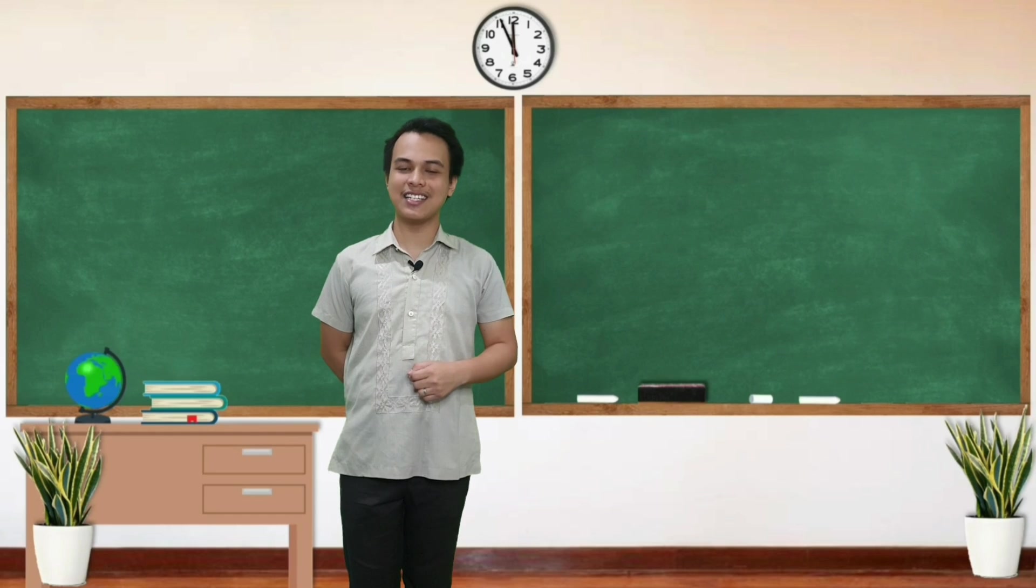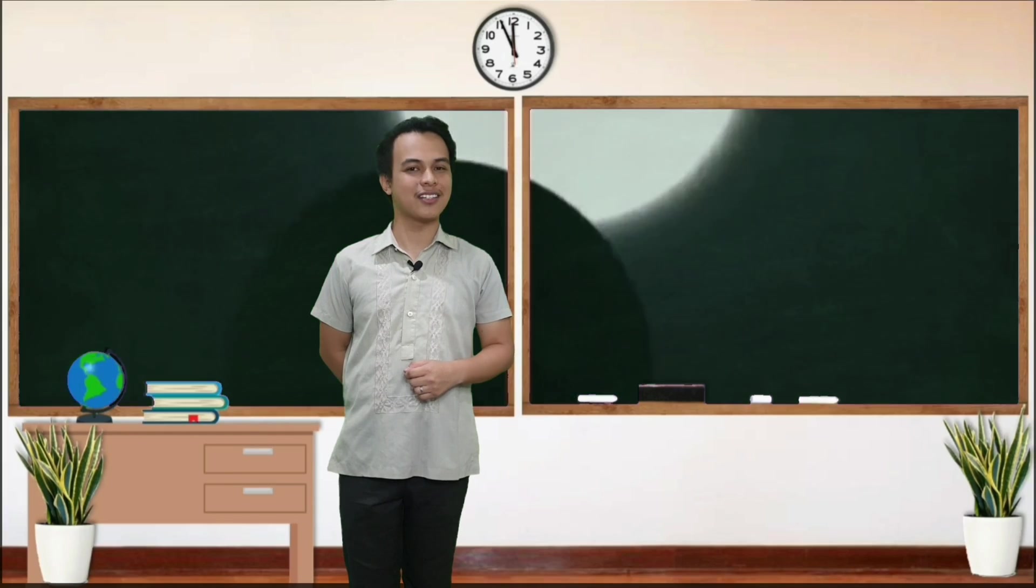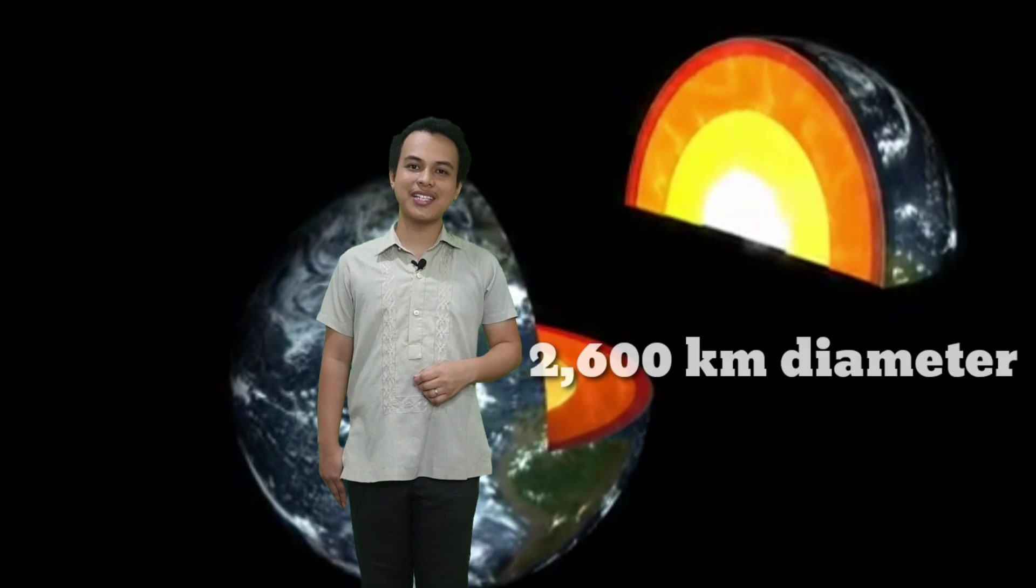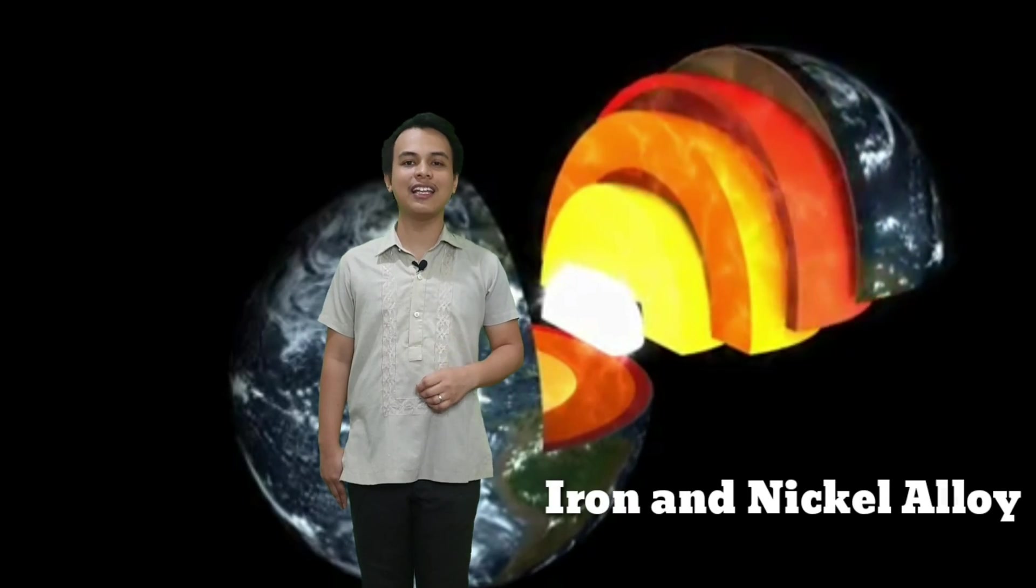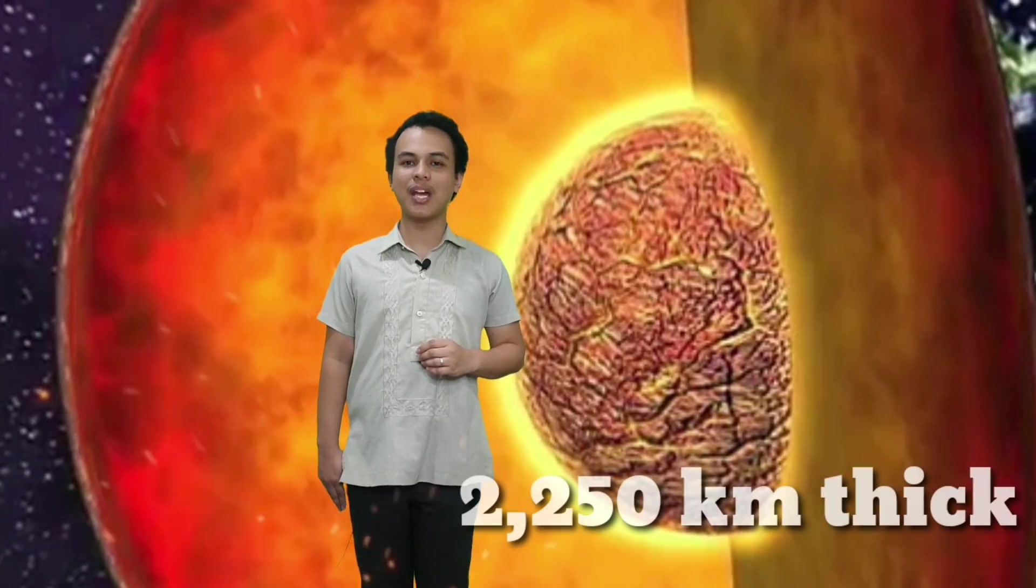Let us discuss these concentric layers one by one starting with the innermost. The inner core has 2,600 kilometers in diameter and consists of iron and nickel alloy. Ang inner core ng ating daigdig ay may approximate temperature na 5,000 degrees Celsius. Ito ay mas mainit ng 250% sa sumunod na layer which is the outer core na may approximate temperature na 2,000 degrees Celsius at may kapal na 2,250 kilometers.